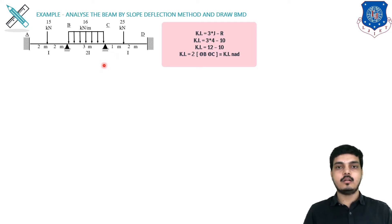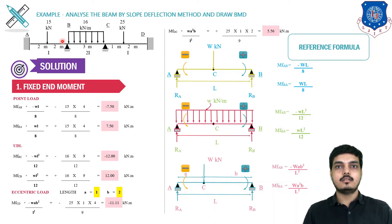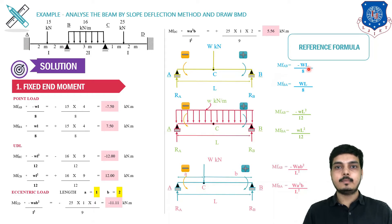Let's start Step 1: fixed end moments. Different formulas are applied for different load cases. For a central point load (AB span), the formula is WL/8. MF_AB is negative (anti-clockwise) and MF_BA is positive (clockwise). So MF_AB = −WL/8 = −15 × 4/8 = −7.5 kNm, and MF_BA = +7.5 kNm.